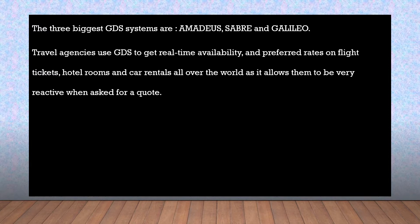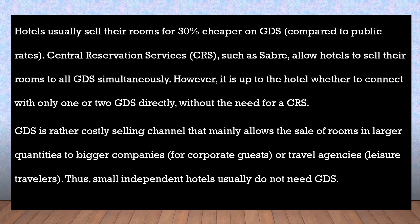Travel agencies use GDS to get real-time availability and preferred rates on flight tickets, hotel rooms and car rentals all over the world, and it allows them to be very reactive when asked for a quote. Hotels usually sell their rooms 30% cheaper on GDS compared to public rates.